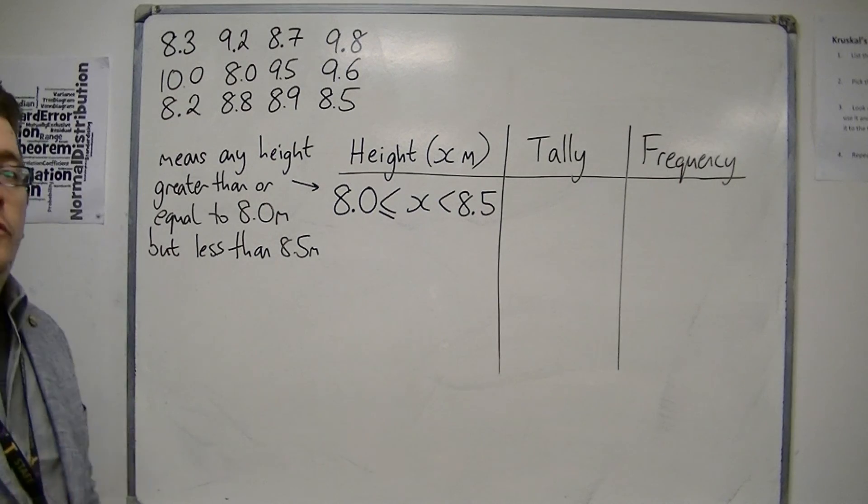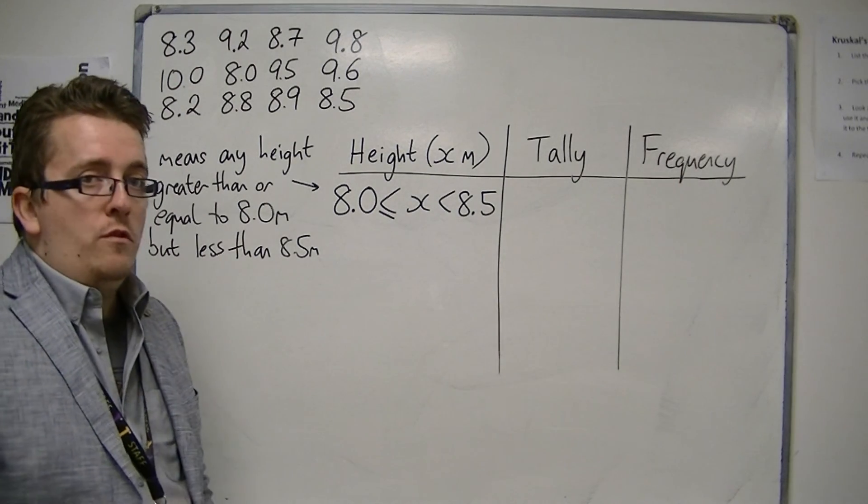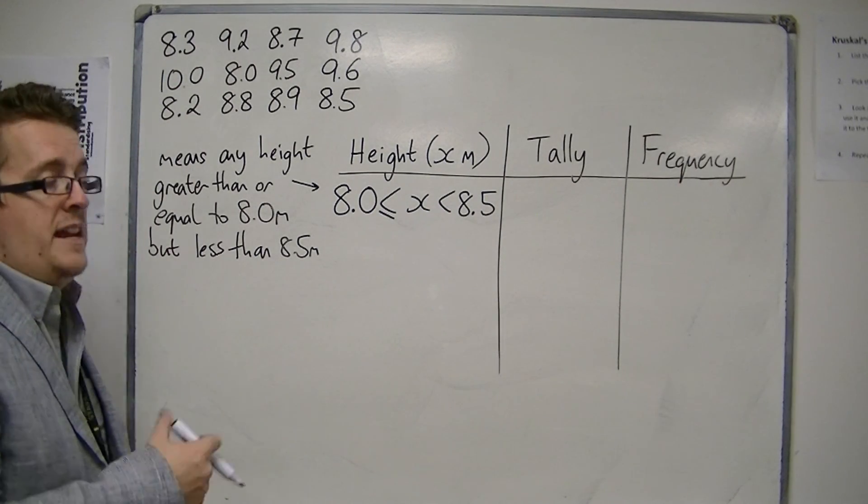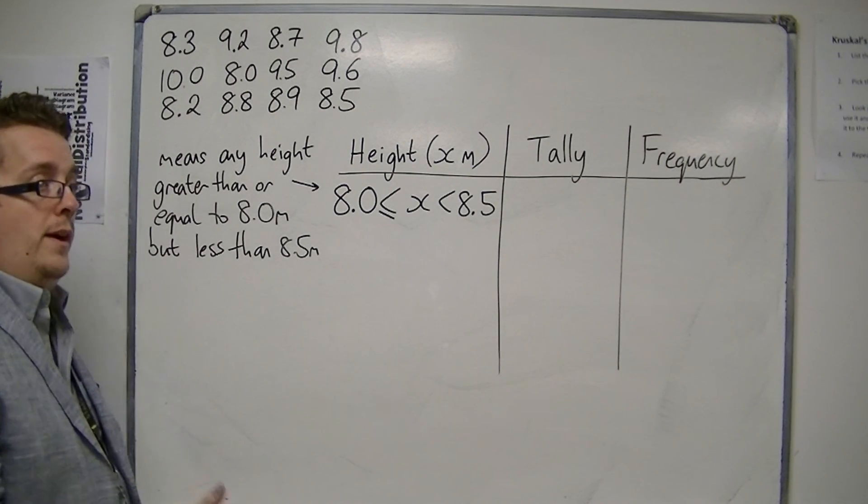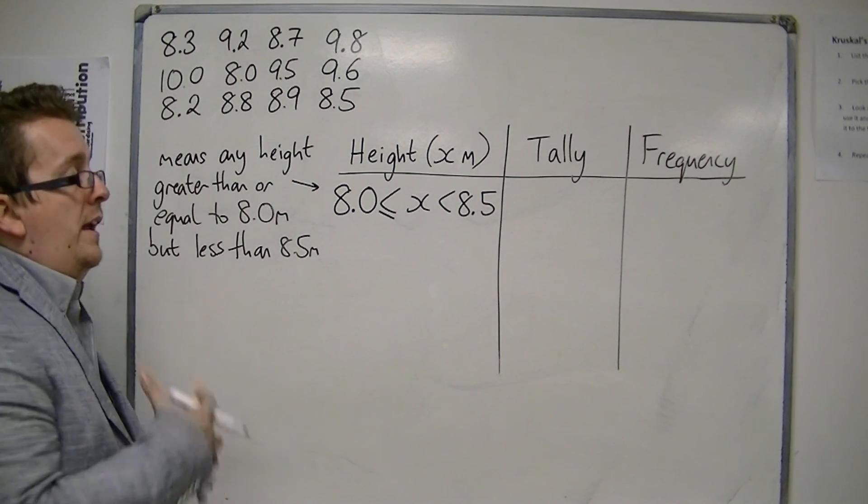So if I have a tree of 8.5 metres, I will not put it in this group. But I will put in 8.4, 8.3, 8.2, 8.257, and so on.